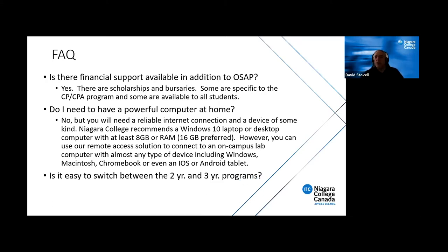You can easily switch between the two and three year programs. You might have signed up for the three year but get a great job offer after the second year — you can just take your two-year diploma and go out and be successful. Or more often, students signed up for the two-year program decide they really want the benefit of the co-op and the final academic term, and decide to switch into the three-year. It's easy to do at pretty much any point right to the end of the second year.